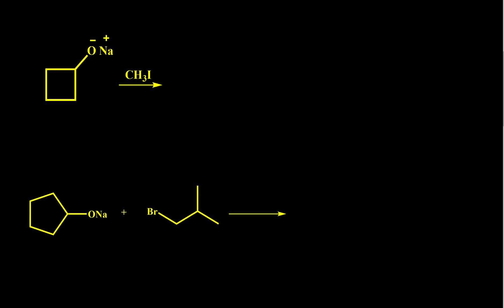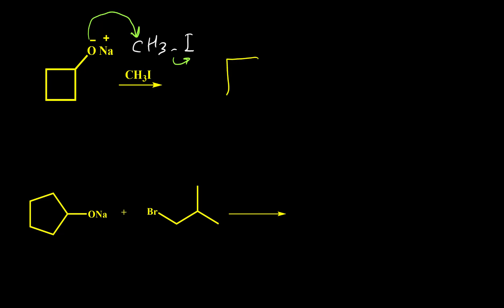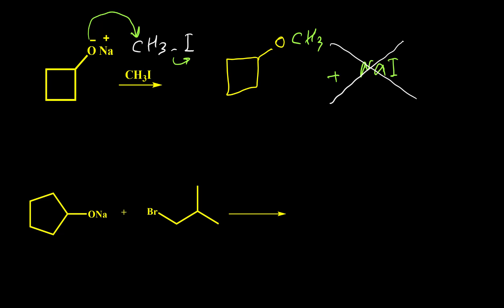Let's look at two examples. In the first example, we have the alkoxide anion O-negative, and it reacts with CH3I, or iodomethane. The O-negative can easily attack and kick iodine out of the structure. As a result, we have oxygen attached to CH3, giving us our ether, plus sodium iodide as a byproduct.